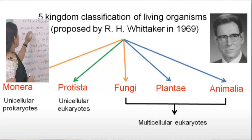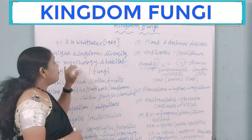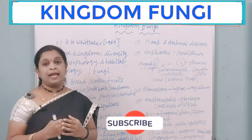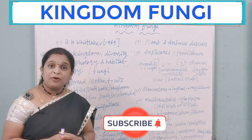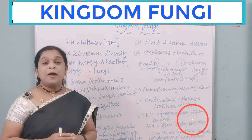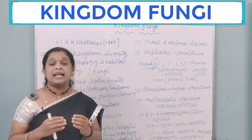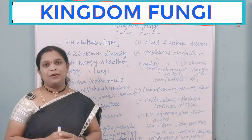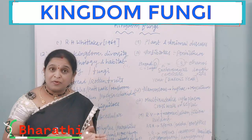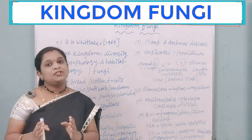The first point is that Fungi is a unique kingdom and it shows diversity in morphology and habitat. Habitat is the dwelling place of an organism. Morphology is a branch of science which deals with the external and internal structure of an organism. Organisms coming under the kingdom Fungi show uniqueness and differ from each other.